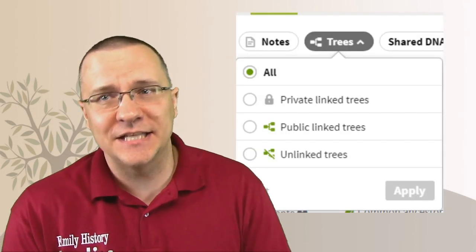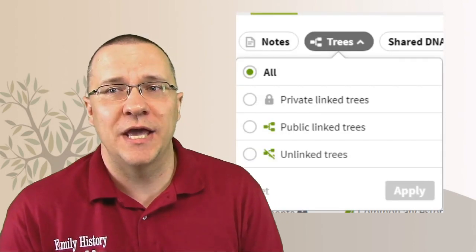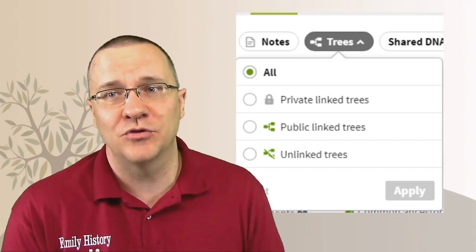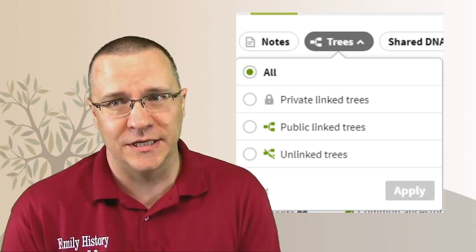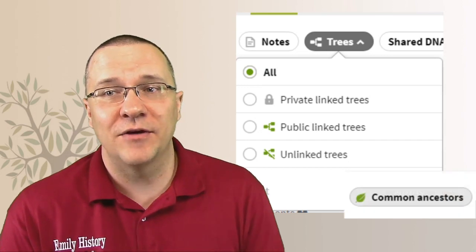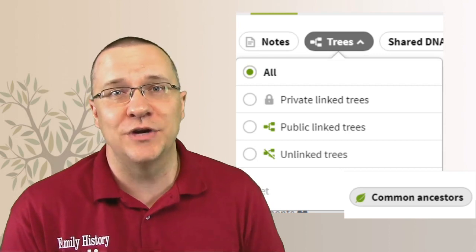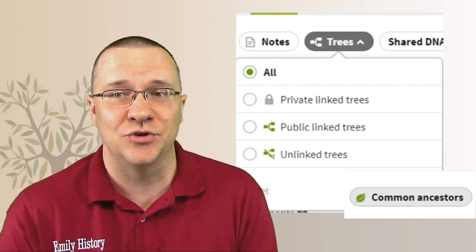How are you able to search your DNA matches in relation to trees? Now on Ancestry, they have an option where you can go through and see whether people have private trees, public linked trees, or unlinked trees. Additionally, there is the option to look for common ancestors. All of these are related to the trees that people build on Ancestry.